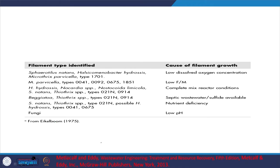From Metcalf and Eddy — different sources have different aspects but there is considerable agreement on causes of filament growth. Most often low F/M leads to formation of filament bacteria. Low DO, typically around 0.5 mg/L, also leads to filamentous growth. Completely mixed reactor conditions typically lead to low F/M as well.